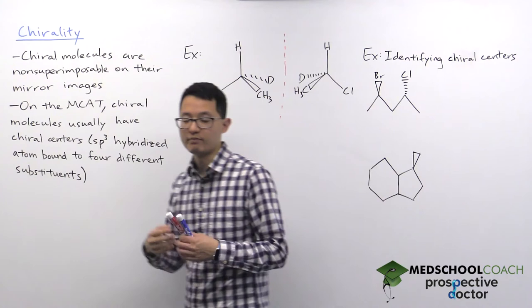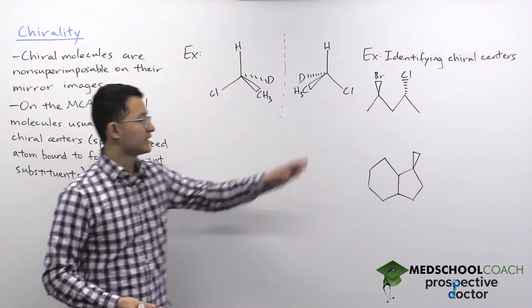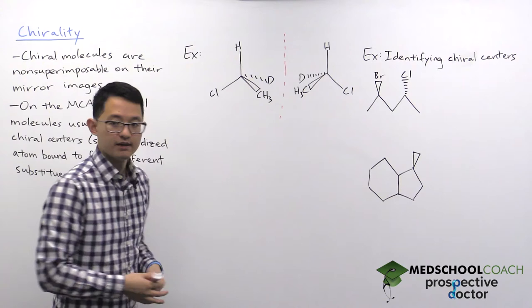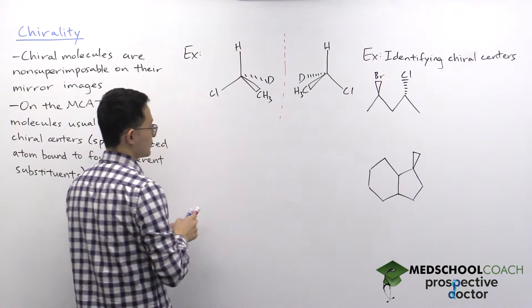Now to better illustrate what I mean by the fact that these molecules are non-superimposable, let's try to stack these two molecules on top of each other. Of course, just putting one on top of the other, they're definitely not going to match because all atoms are in different positions. But let's say I try to take one of these isomers and flip it 180 degrees.